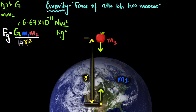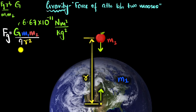Similarly, what would happen if you were to triple the distance? Now you have 3r squared, which becomes 9r squared. So I have a nine in the denominator — the force of gravity becomes one-ninth. When you go three times as far away, the force becomes not one-third but one-ninth.